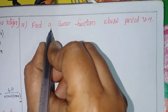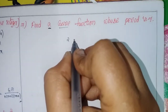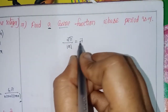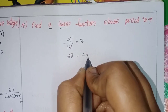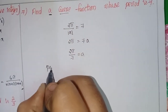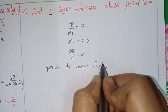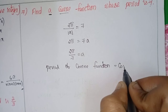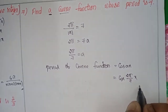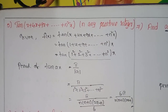Similarly for the 7th one, find the cosine function given its period is 7. The period of cosecant/cosine is 2π by modulus of a. So 2π by modulus of a equals 7. Cross multiplying: 2π = 7a, so modulus of a equals 2π/7. Therefore the function is f(x) = cos(2π/7 · x).